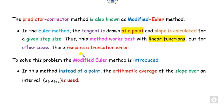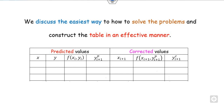In the modified Euler method, instead of taking the slope at a single point, we take the average of the slopes at point x_i and the next point x_{i+1}. In the basic Euler method the slope is calculated only at x_i. Our task is to complete a table containing predictor and corrected values to get the final answer.